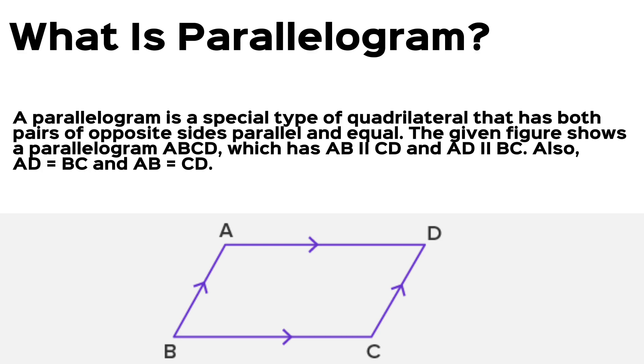What is a parallelogram? A parallelogram is a special type of quadrilateral that has both pairs of opposite sides parallel and equal. The given figure shows a parallelogram ABCD which has AB parallel to CD and AD parallel to BC. Also, AD equals BC and AB equals CD.